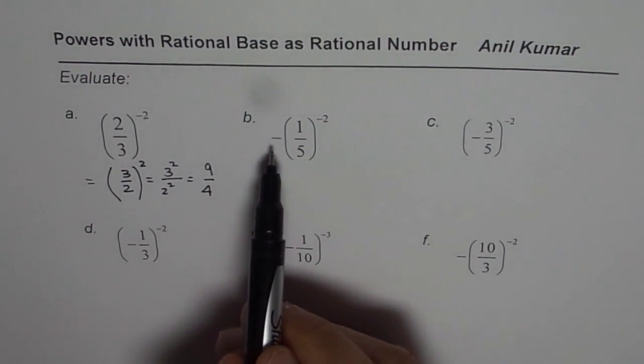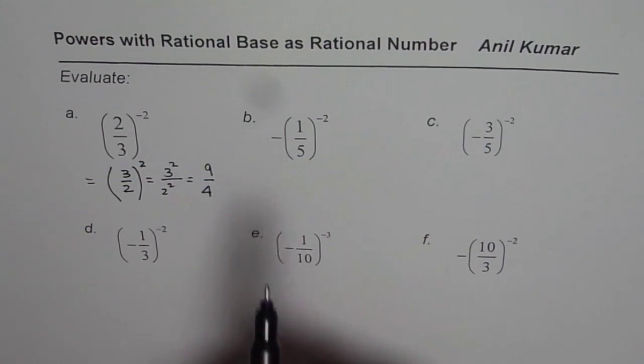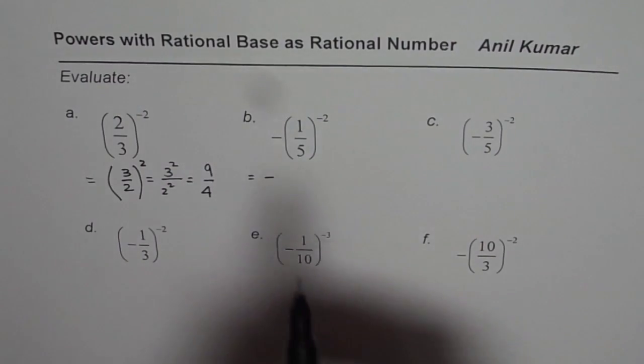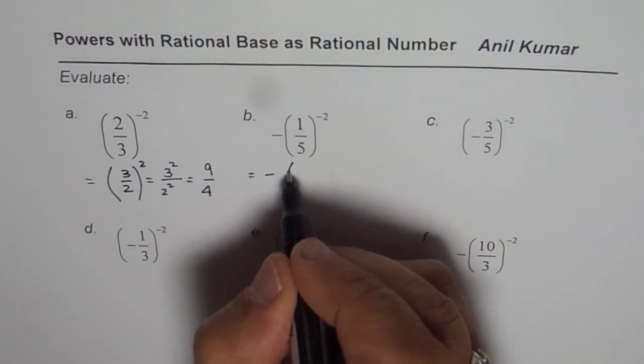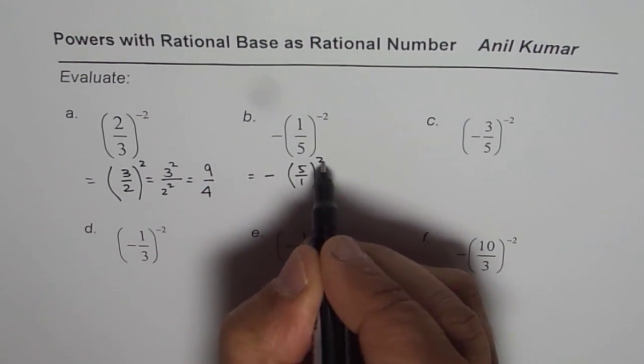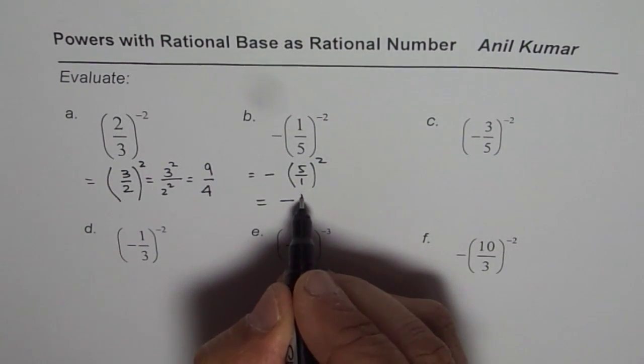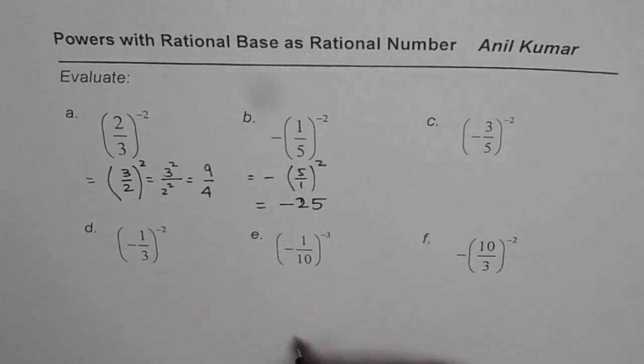Now, this negative sign is outside, not inside. So, this remains. So, when we write here, we'll write the negative sign which is outside as such. Minus will flip 1 and 5. So, we get this time 5/1, and then square which results into -5^2 which is -25. So, that is your answer.